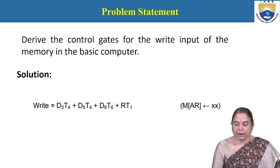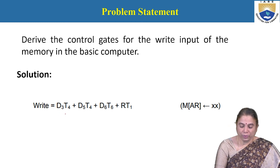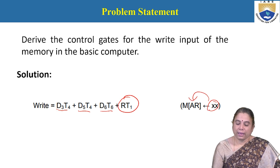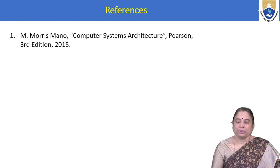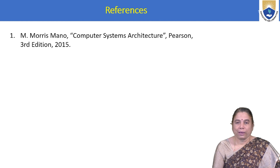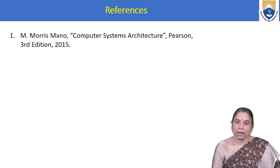Derive the control gate for the write input of the memory in the basic computer. To write to memory, the write cycle uses data fetched at each clock signal. To perform a memory write, the input data is moved to the address pointed by the AR register in memory. These are the problems related to basic computer organization. The reference textbook is Computer System Architecture by Morris Mano, and the solutions to the problems mentioned in that textbook have been discussed.